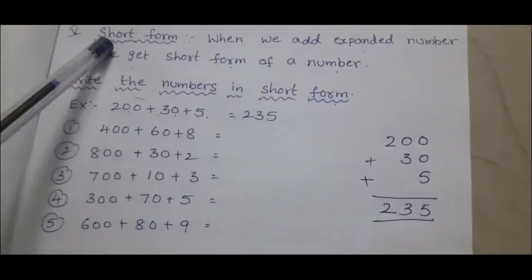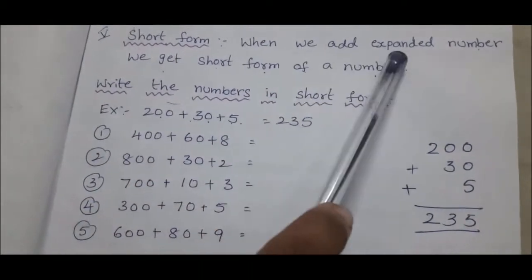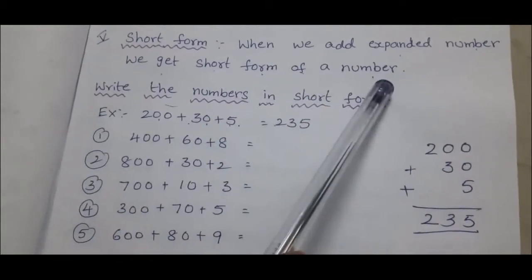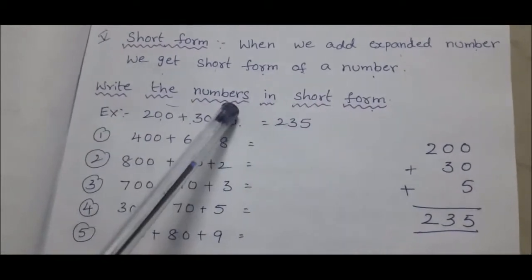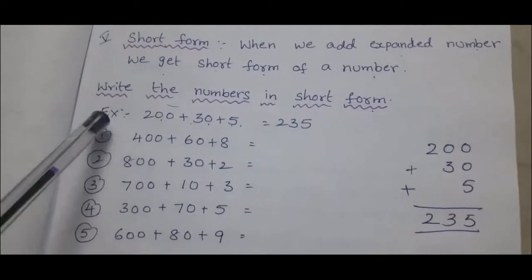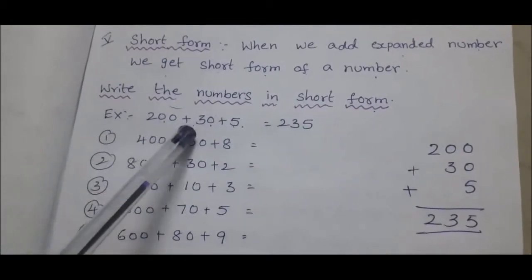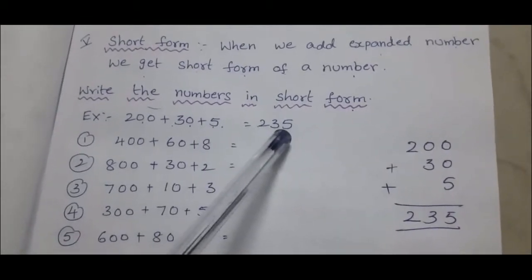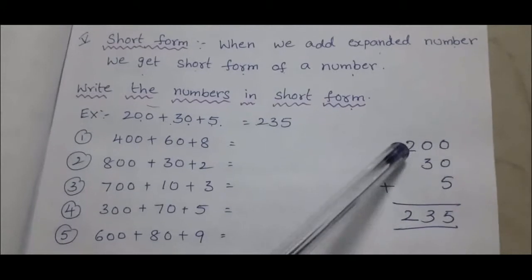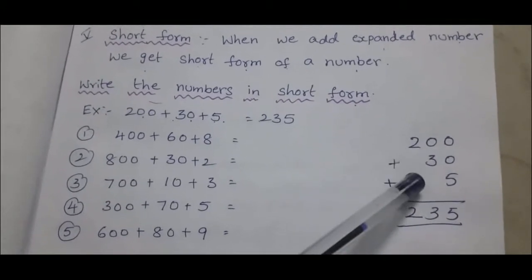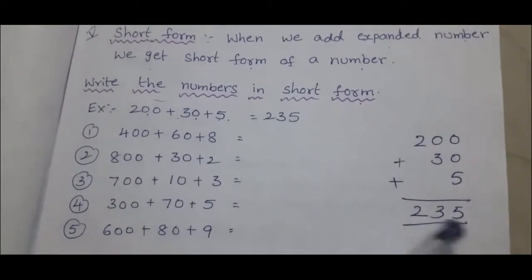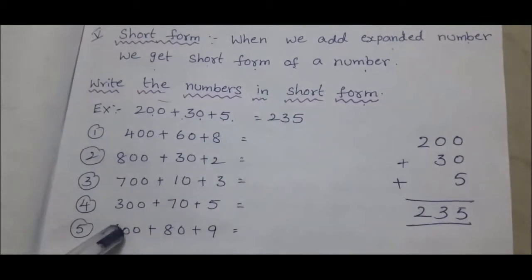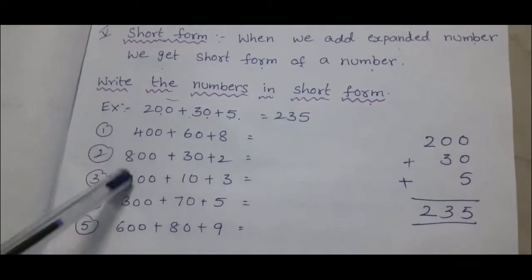Next: short form. Short form means when we add the expanded number, we get the short form. Example: 200 plus 30 plus 5 equals 235. We add the three numbers and get 235. One is done for you; remaining problems you do.